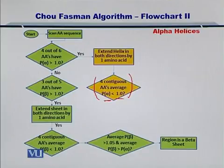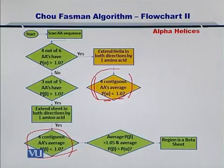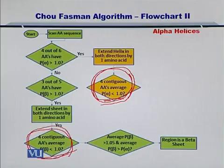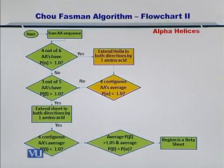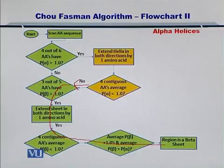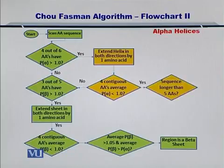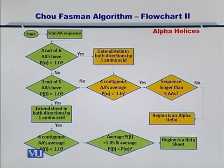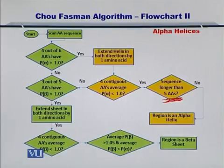Note that this is the same condition as in the beta sheet case, except here we check 4 contiguous amino acids for their propensity to form an alpha helix, while in beta sheet prediction we check the same 4 contiguous amino acids for their propensity to form a beta sheet. If the condition is not true and an alpha helix is not to be formed, then you shift the algorithm back towards forming a beta sheet. However, if the sequence does want to form an alpha helix, you check if the amino acid sequence is greater than 5 amino acids in length and consider the region to be an alpha helix. If it is less than 5 amino acids, you may want to consider other options.